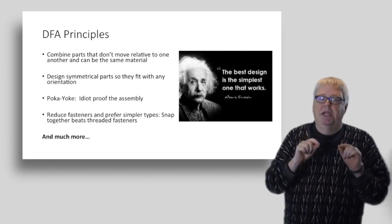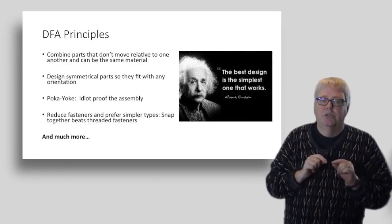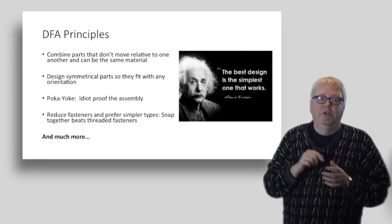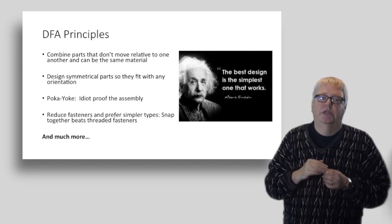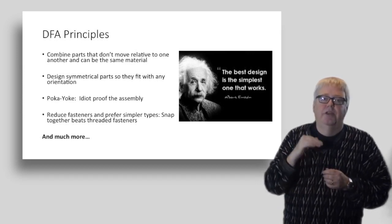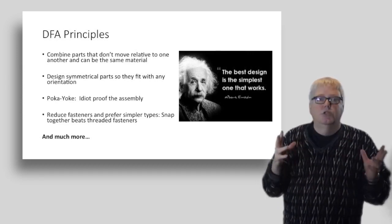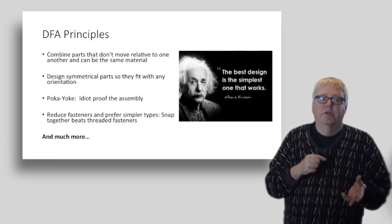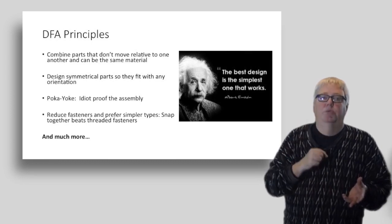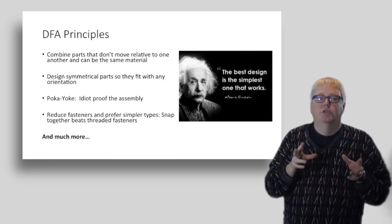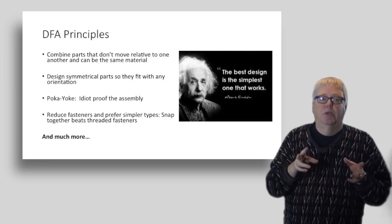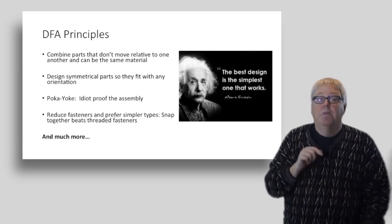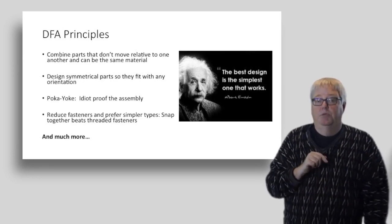Next, optimize to make it easier to assemble the parts. Design symmetrical parts that work in any orientation. If you're into lean manufacturing, look for poke a yoke opportunities. That's basically idiot proofing the assembly process so there's no way to make a mistake when you're trying to assemble the parts. Reduce the number of fasteners and pick simpler fasteners. Threaded fasteners are the most expensive and difficult to assemble. Snap together is much better if you can arrange for it in your design. There are many more DFA principles like this one.